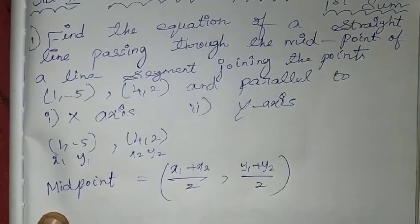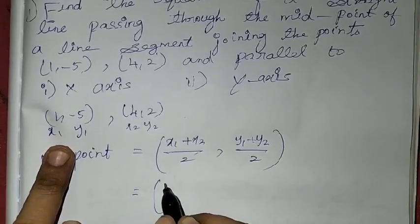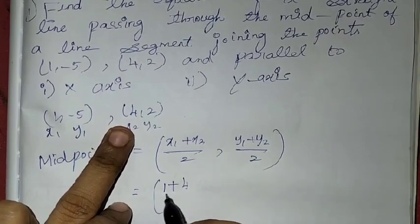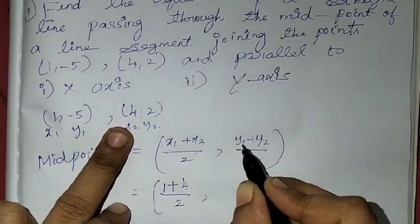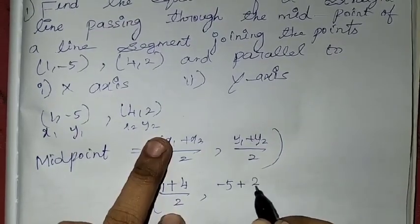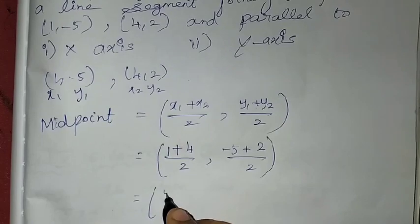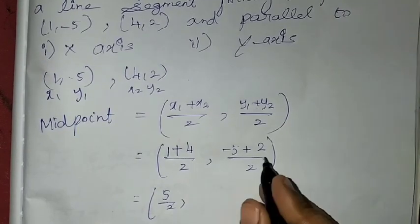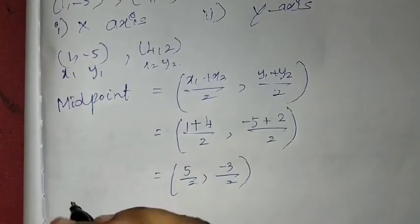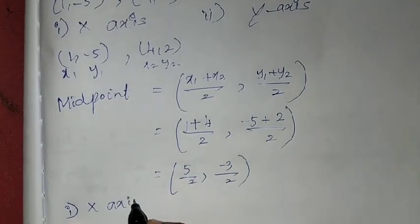We want to substitute: in the place of x1 put 1, and in the place of x2 put 4, so that is (1 + 4) / 2. For y1 put -5, and y2 put 2, so (-5 + 2) / 2. Simplifying: 1 + 4 is 5, so we get 5/2. For y: -5 + 2 is -3, because of different signs we subtract and write the highest number's sign. So we get the midpoint as (5/2, -3/2).